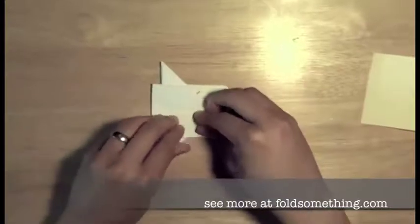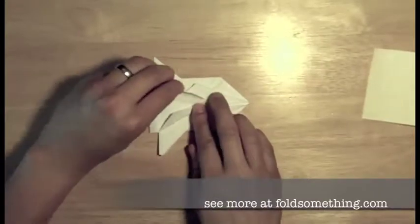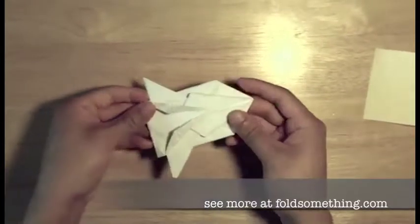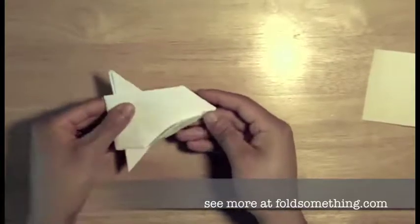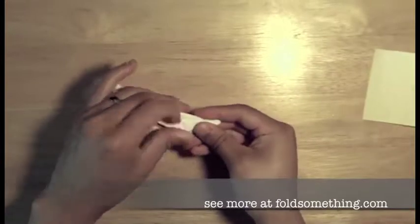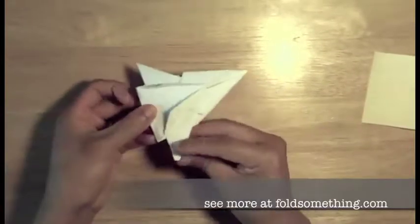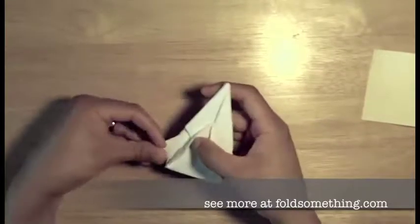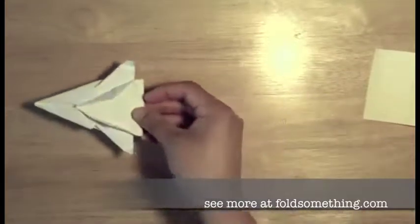Now you can modify it by folding the flaps like so. You can fold these flaps on the bottom here. If you like, you can put some fins on the wings by folding them up as well. And there's your spaceship.